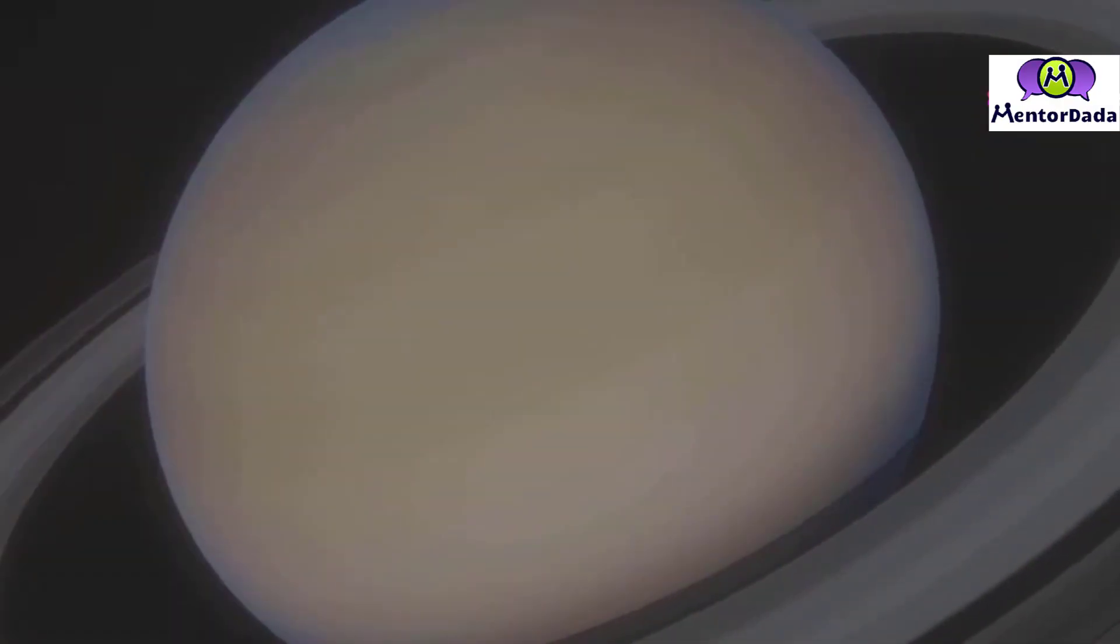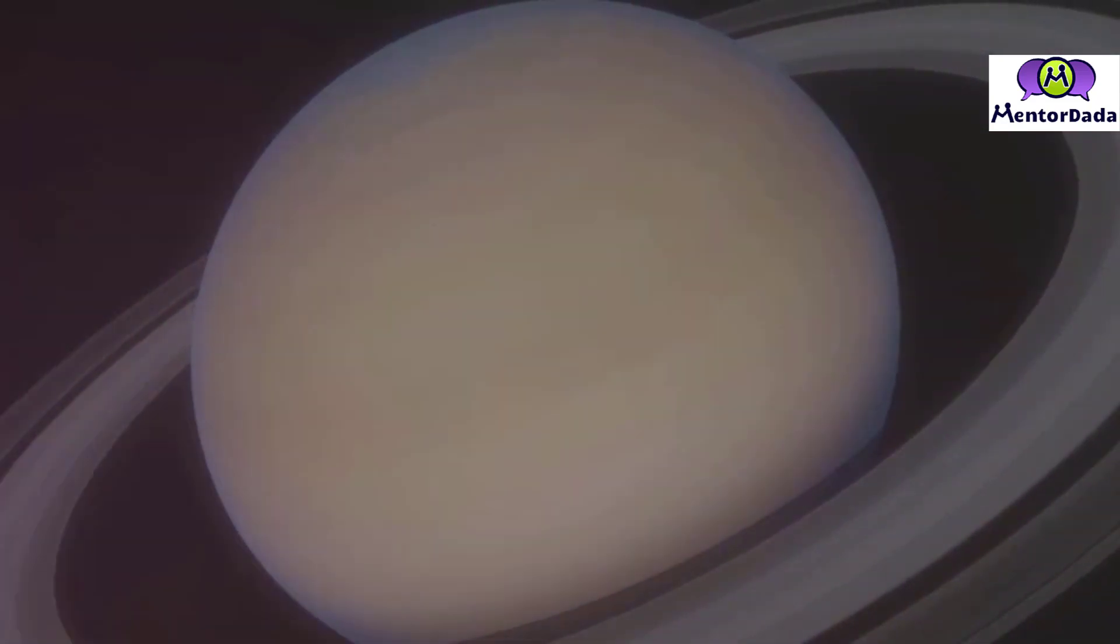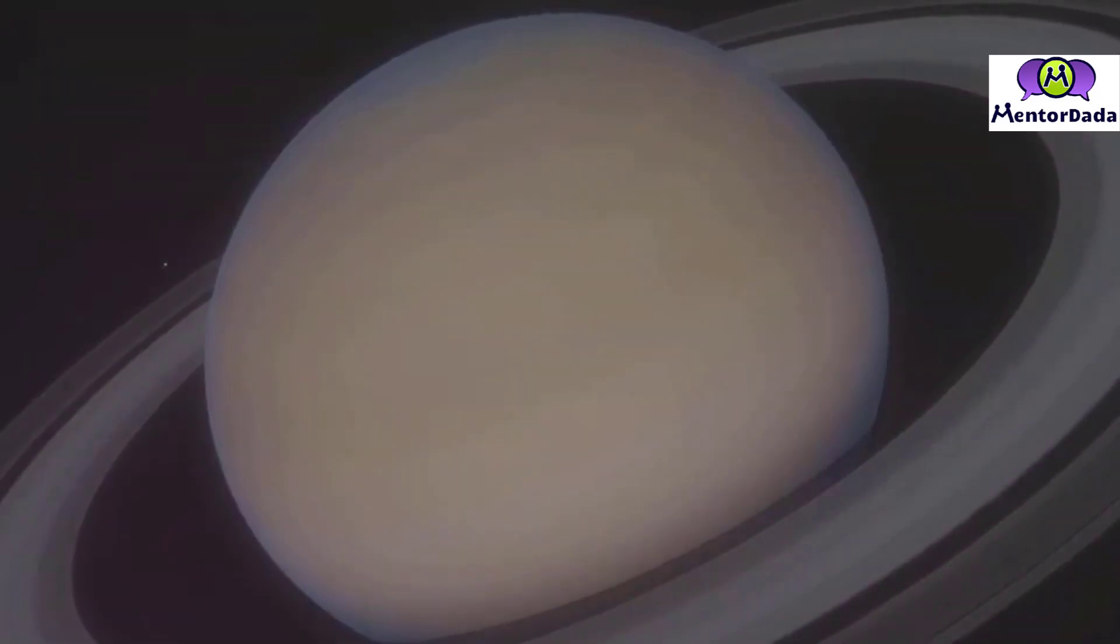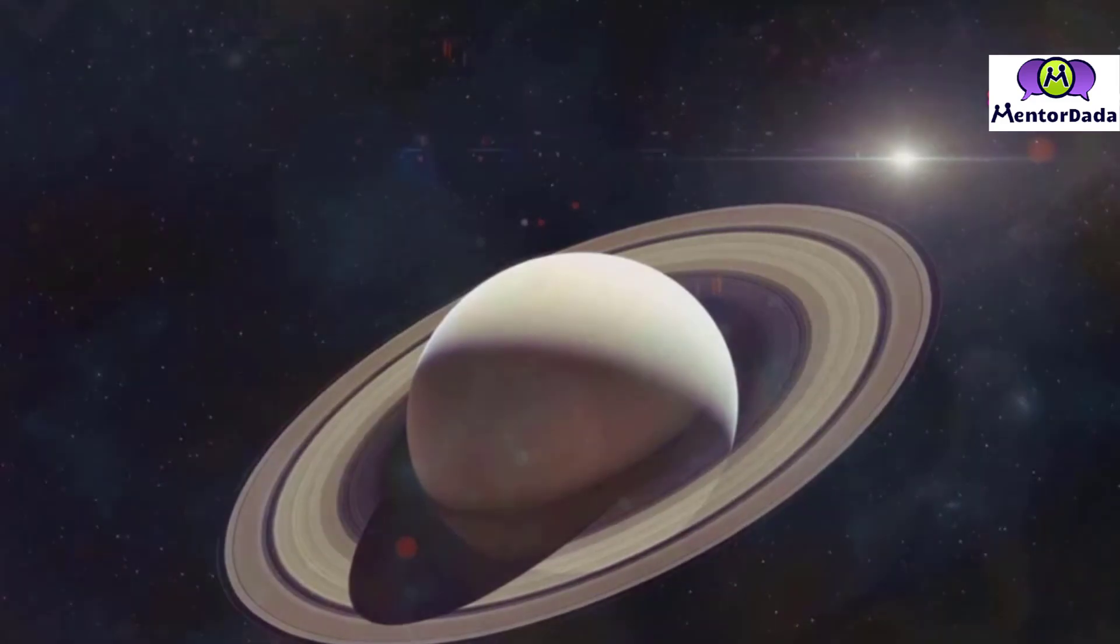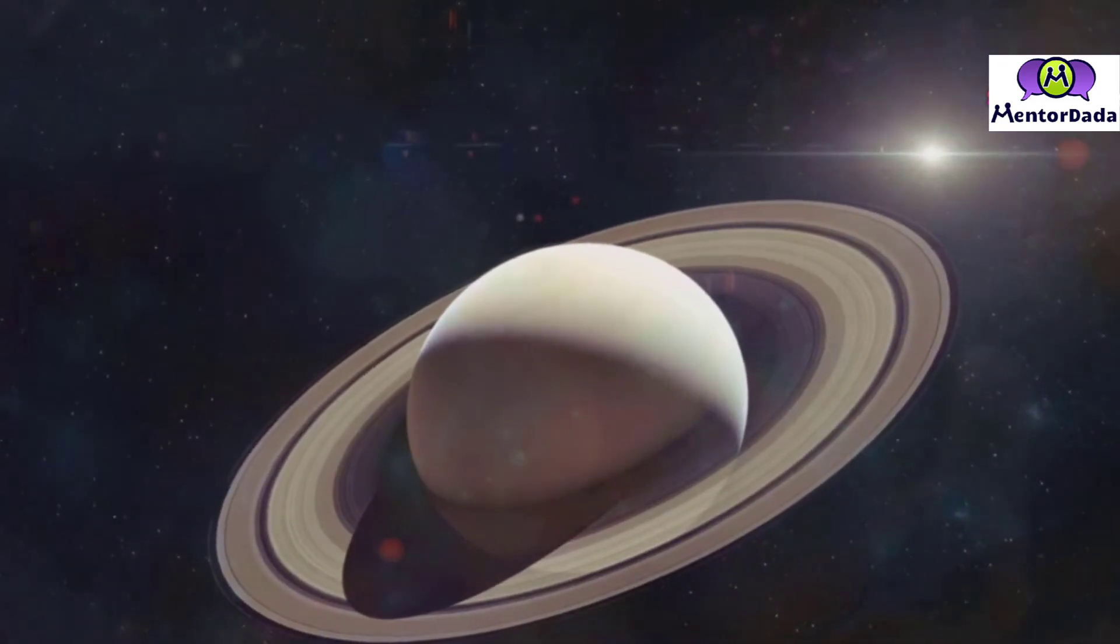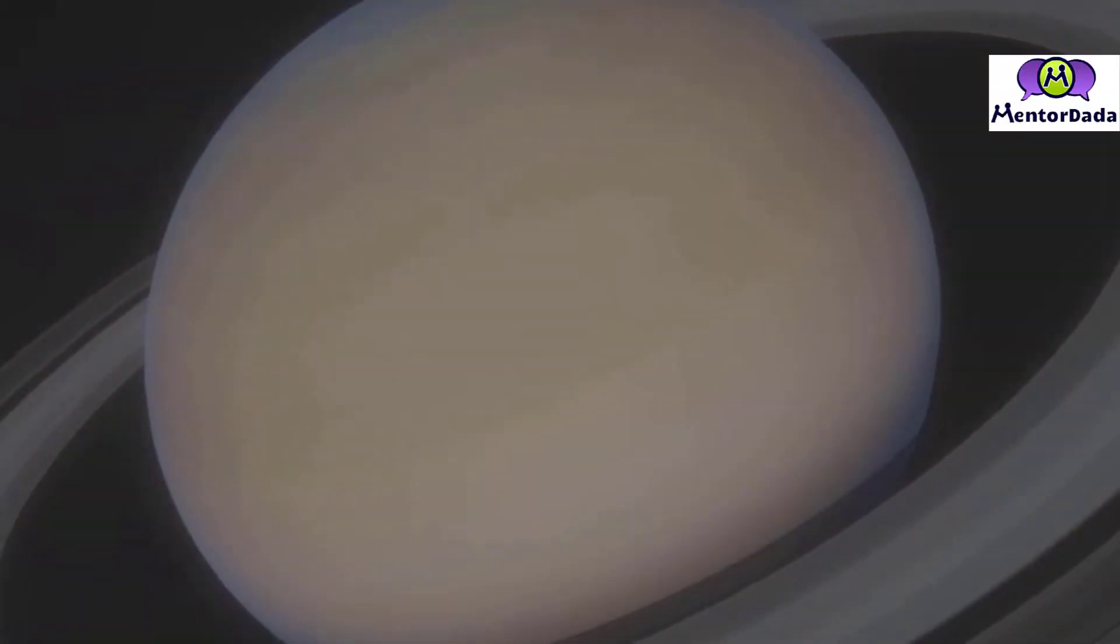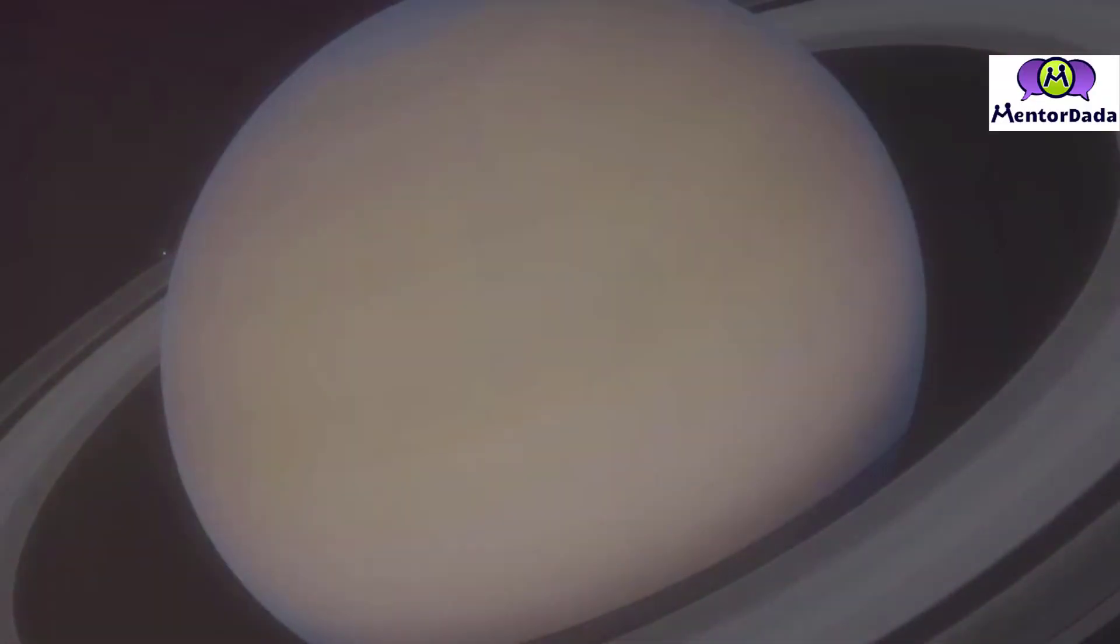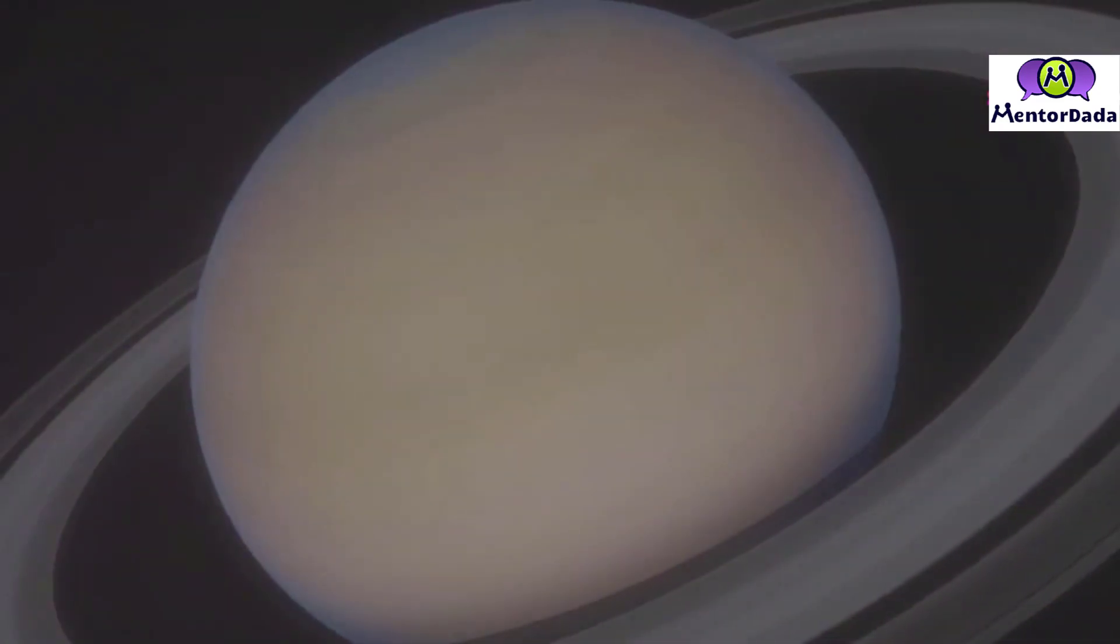Saturn, the ringed wonder of our solar system, needs no introduction. Its majestic rings, composed of countless icy particles, are a celestial spectacle. Even a small telescope can reveal the intricate structure of these rings, a testament to the beauty and complexity of our cosmic neighborhood. During the alignment, Saturn's rings will be tilted at an angle that showcases their full glory, a sight that is sure to leave a lasting impression.